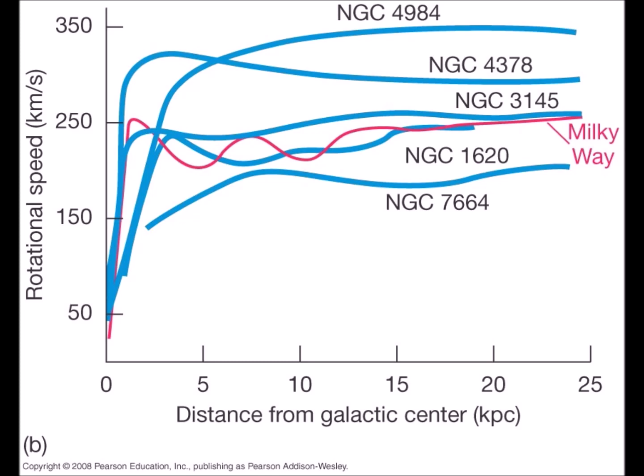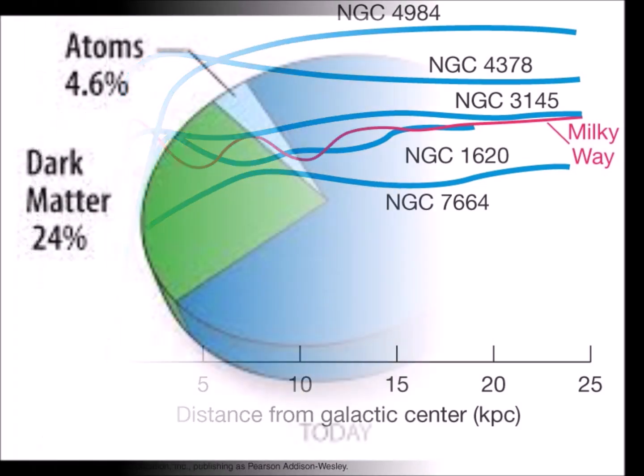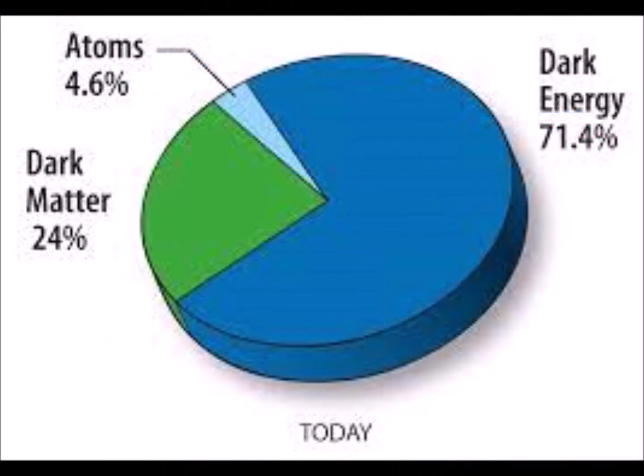The first hypothesis to solve the galaxy problem was based on the existence of an invisible mass in the halo of galaxies. This missing mass, called black mass, should represent almost six times the visible mass.